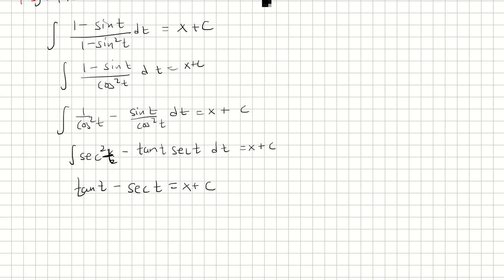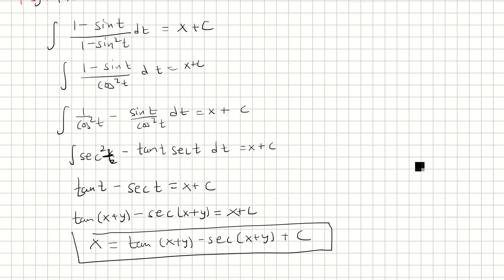Now we can substitute. We said t was x plus y, so I'm going to plug that in. Then in order to solve this, we could just solve for x and bring the constant over: x equals tangent of x plus y minus secant of x plus y plus c. So this is the final answer.